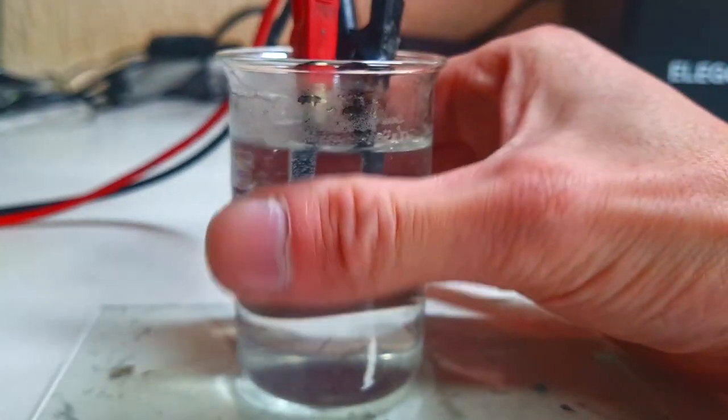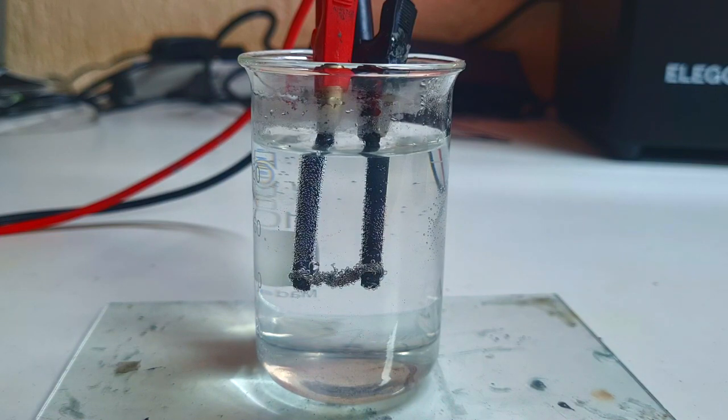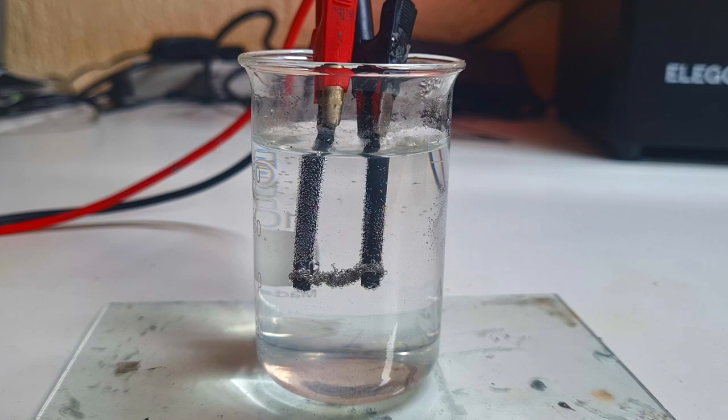So guys, this was my little experiment with this little carbon rod heater. Of course, if I apply a little bit more power into this heater, this water will heat up faster. But on 5 amps and 2 volts, this little heater was also not so bad. That's it and we see us in the next video. Bye.